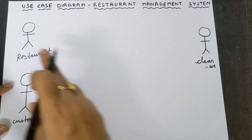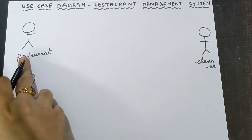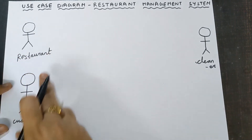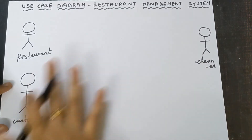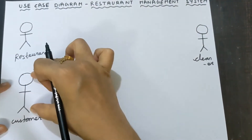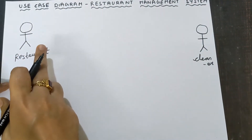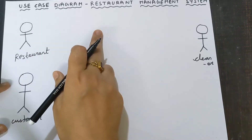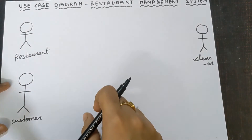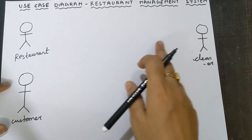The actor is always represented with a stick-figure symbol, and below that symbol you write the name of the actor. Total three actors are there in this diagram. The second step is, for each actor separately, we need to write the use cases — use cases for restaurant, for customer, and for cleaner.